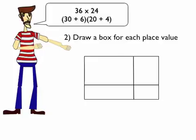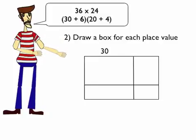Thirty and six. Thirty is bigger than six, it gets more room. How about twenty? Twenty gets more room than four, it's bigger. So, I put the thirty-six on the top, and the twenty-four on the side.